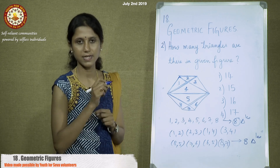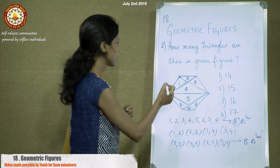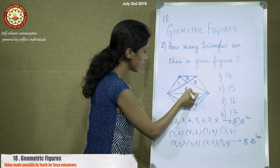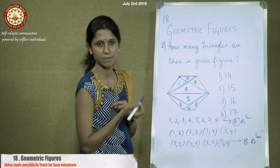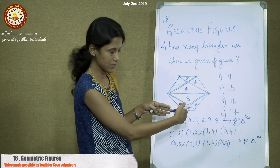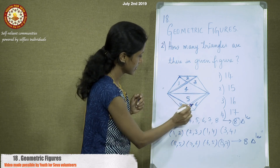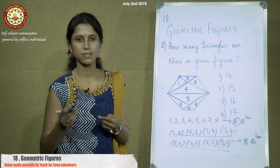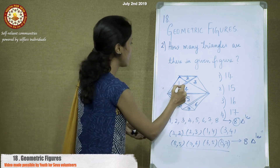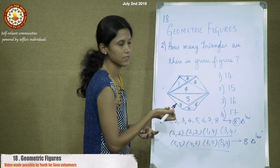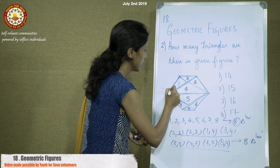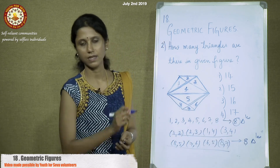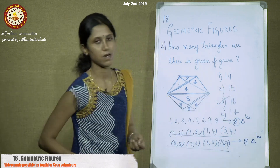Now taking combinations of two parts: 1 and 2 represents a triangle; 2 and 3 represents a triangle; 3 and 4 is a triangle; 1 and 4 is a triangle. The same repeats in the lower part: 8 and 5, 7 and 6, 6 and 5, 8 and 7 — totaling 4 plus 4, that is 8 more triangles. If we join 3 parts — for example 1, 2, 3 — it is not a triangle; it forms a trapezium. So the total count is 8 plus 8 = 16 triangles. The third option is the answer.